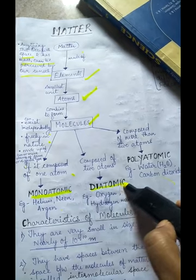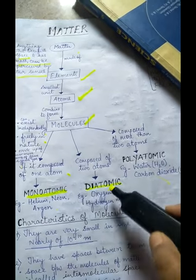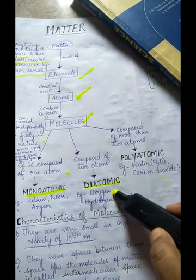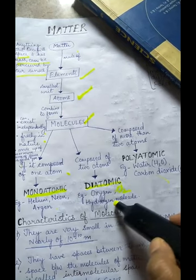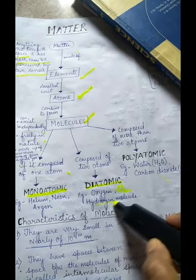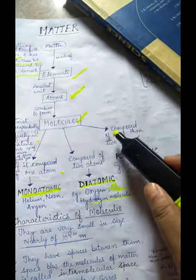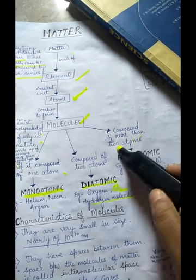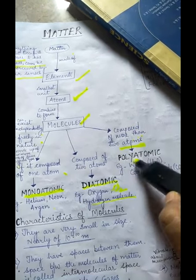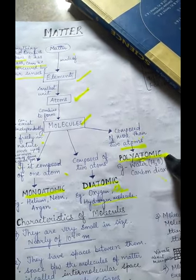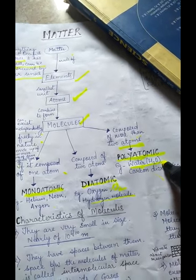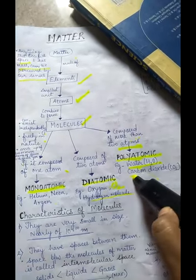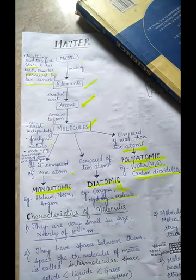Diatomic examples are oxygen (O₂) and hydrogen molecule. If a molecule is composed of more than two atoms, it is known as polyatomic. Examples include water (H₂O) and carbon dioxide (CO₂).